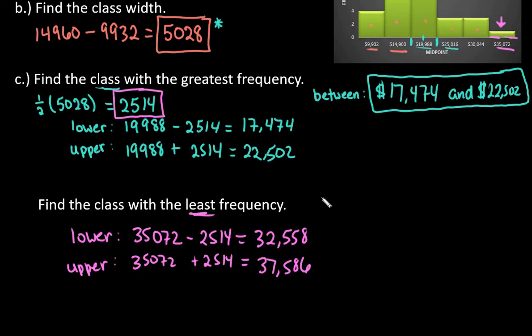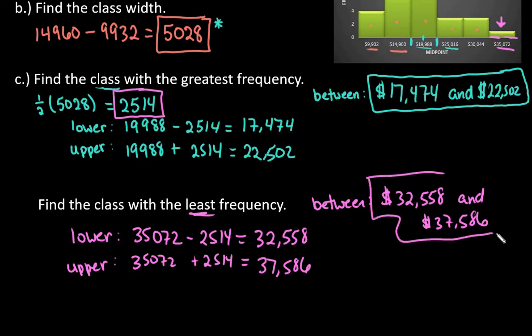So we can say that the class with the least frequency is between 32,558 and 37,586.